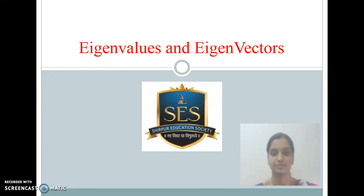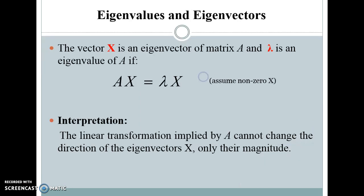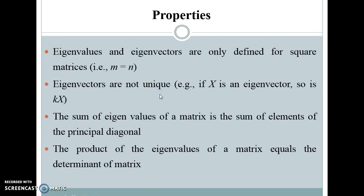Hello everyone, this is Amruta Bhandari. Today we are going to talk on the topic eigenvalues and eigenvectors, which is one of the topics of Engineering Mathematics 1. To begin with, let us see the definition: the vector x is an eigenvector of a matrix A, and lambda is an eigenvalue, if Ax equals lambda x. The interpretation means a linear transformation implied by A cannot change the direction of the eigenvector x, but only its magnitude.